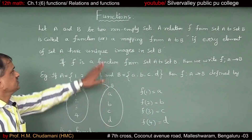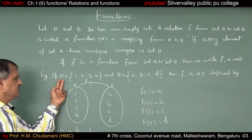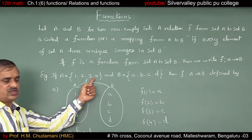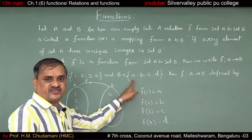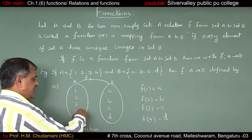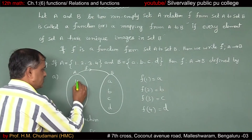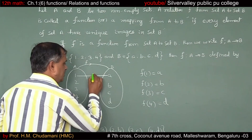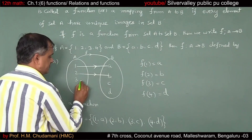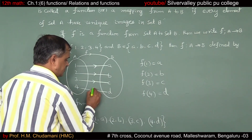The next concept: functions. Let us take two non-empty sets, say A equals {1, 2, 3, 4} and B equals {A, B, C, D}. The set A contains 1, 2, 3, 4 and B contains A, B, C, D. I just relate 1 to A, 1 associated to A, 2 associated to B, 3 associated to C, 4 associated to D.